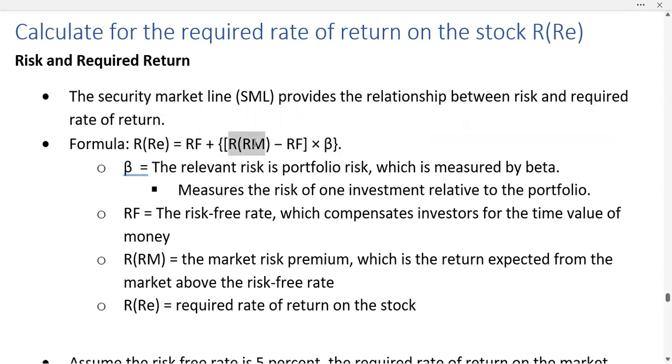Plus, you calculate this first. R(RM) is your market risk premium, hence the M there, which is the return expected from the market above the risk-free rate minus your risk-free rate. Once you have the difference of this,